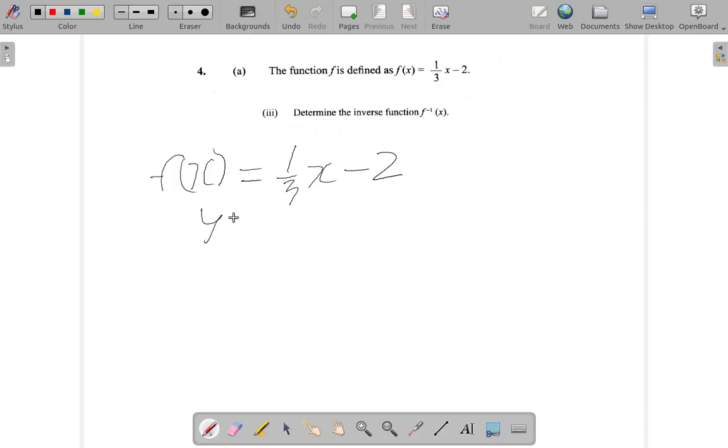Rewrite it as y is equal to 1 third x minus 2. Interchange x and y. Change x to y and y to x. So change y to x, x equals 1 third, x to y, y minus 2.